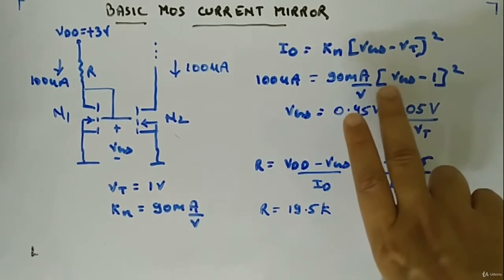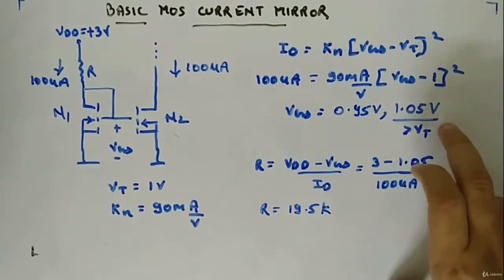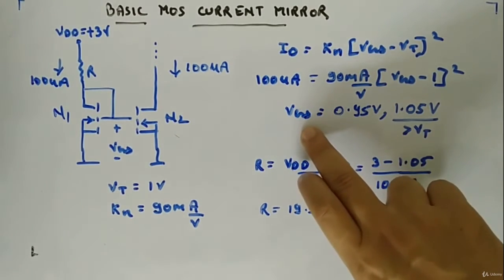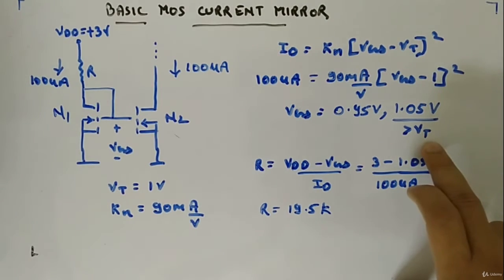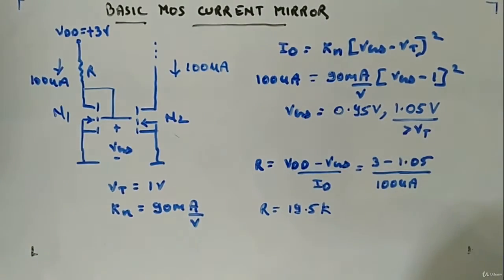If you calculate the value of VGS here you will get two values since it's a quadratic equation: 0.95 volt and 1.05 volt VGS values. We will choose 1.05 volt because it is greater than threshold voltage. If VGS is less than threshold voltage there won't be any current in the MOSFET.